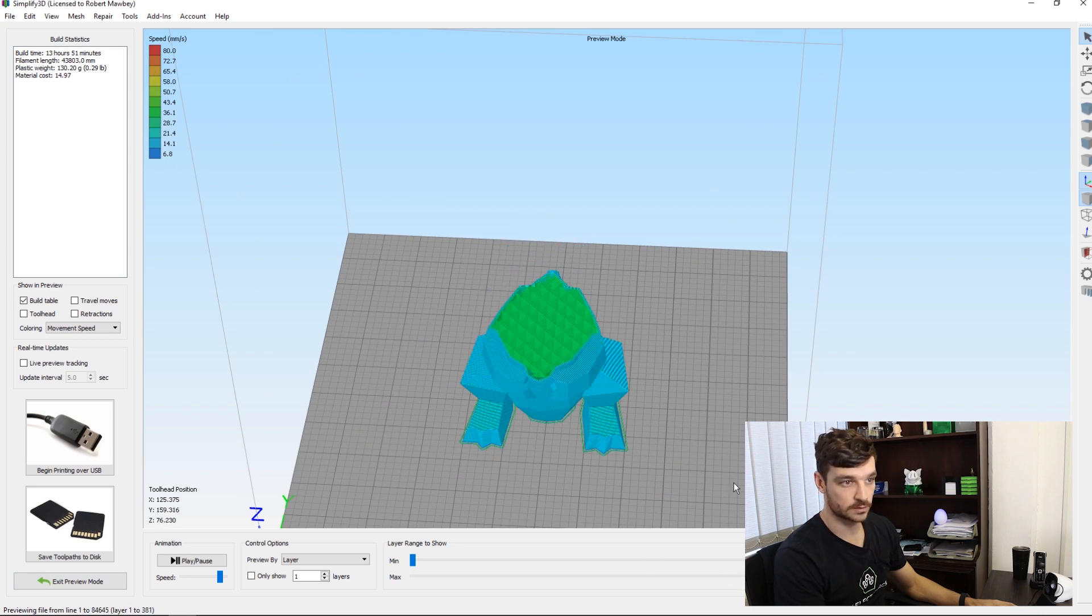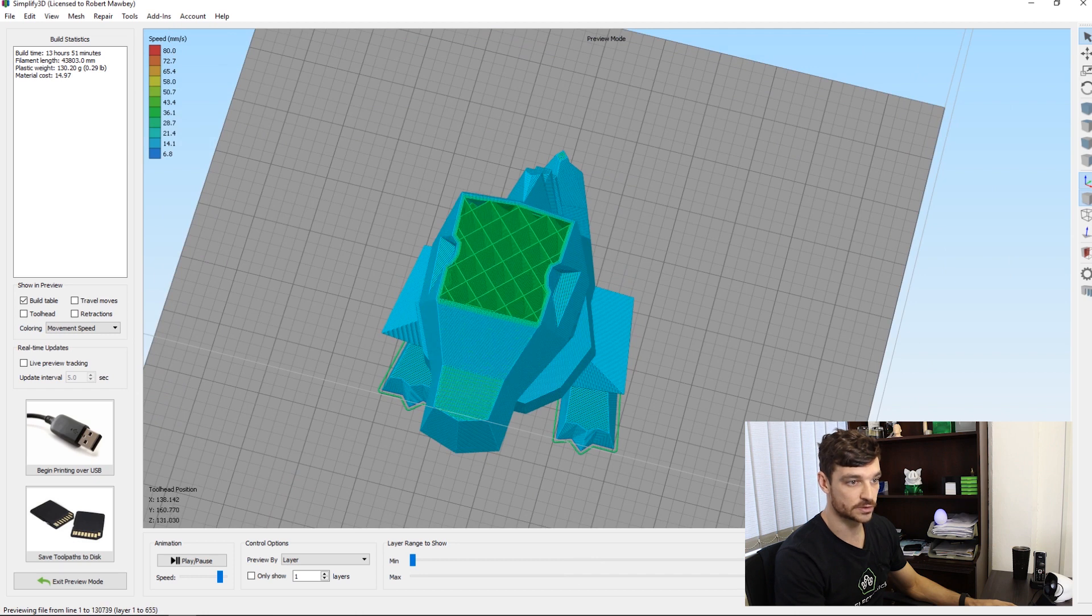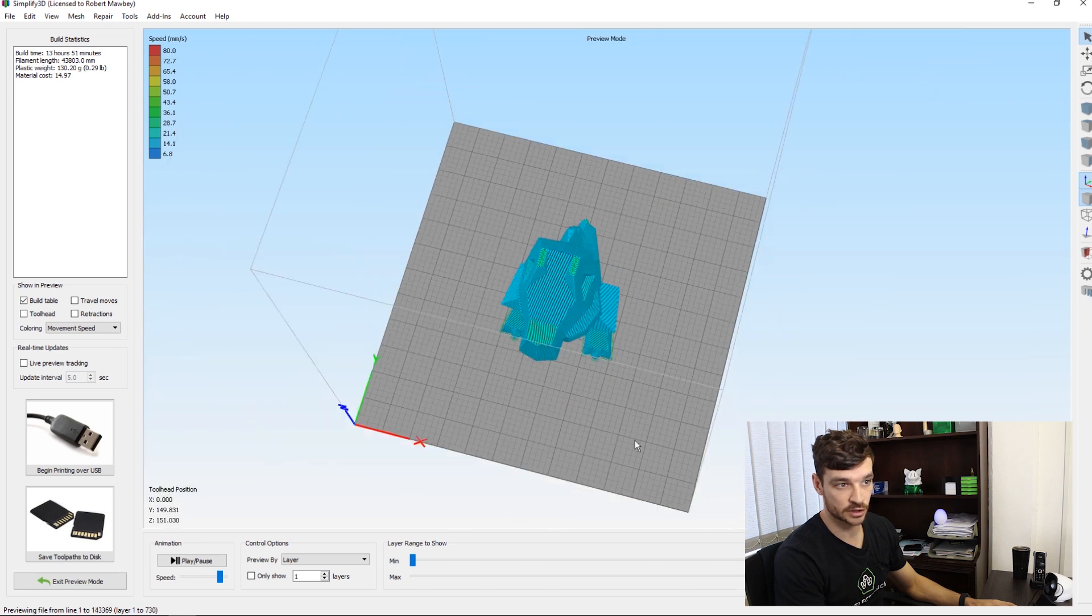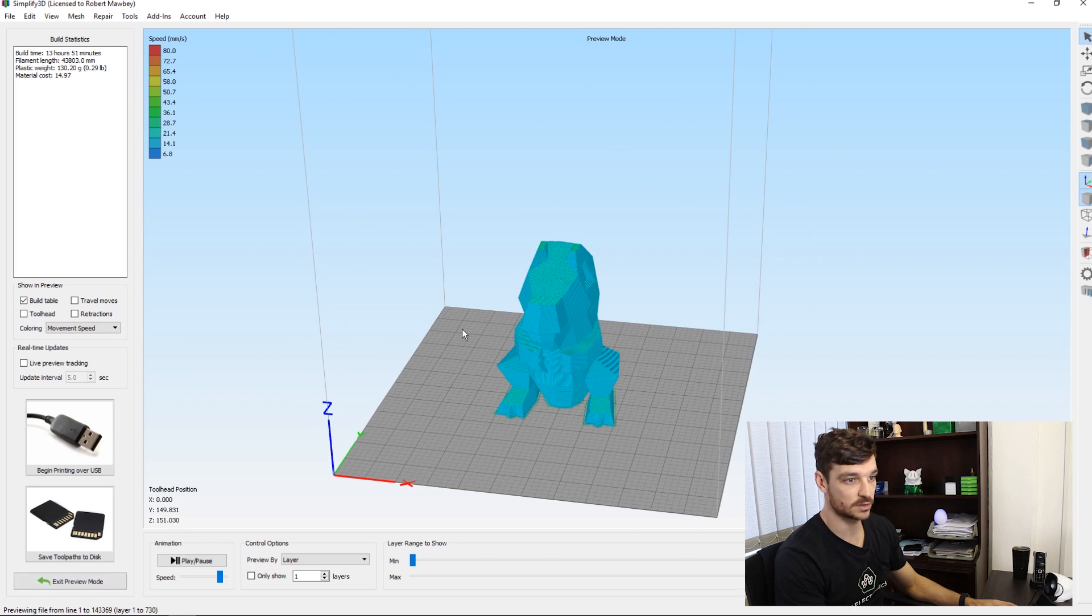The reason I went for four top solid layers is there's less infill to support the model near the top, and there are some overhangs. So the four top solid layers should ensure that it's still nice and neat when it gets to the top of the print. We'll see what the result's like. Let's go and print this out.